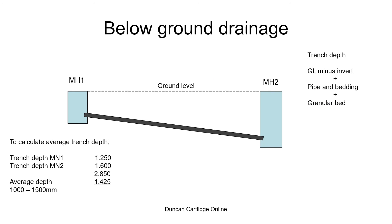To calculate the depth of drain runs, as illustrated on this page, subtract the ground or excavation starting level from the invert level. Both these levels will be given on drawings or a schedule, and then add on allowances for the pipe and bedding and the granular bed.